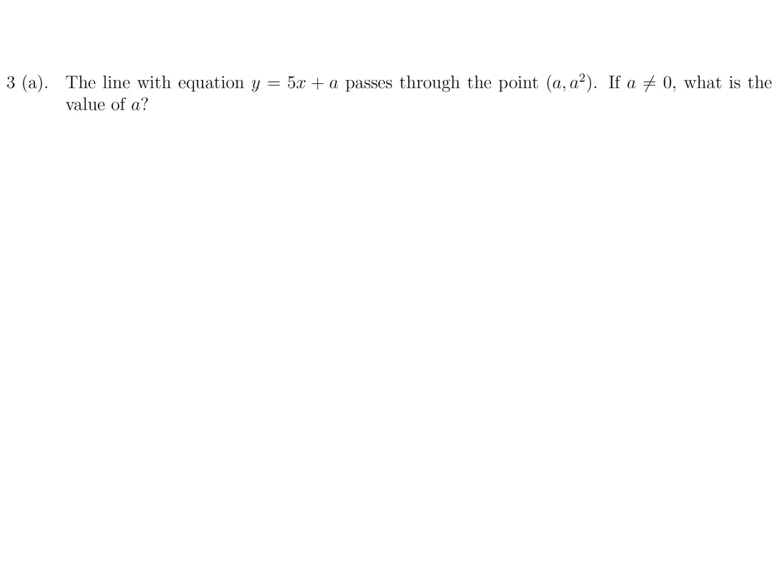The line with the equation y equals 5x plus a passes through the point (a, a squared). If a is not 0, what is the value of a? Okay. So I've been that guy. a squared is equal to 5a plus a. a squared is equal to 6a. Divide through by a, which is possible since a is not 0. And therefore, a is 6.